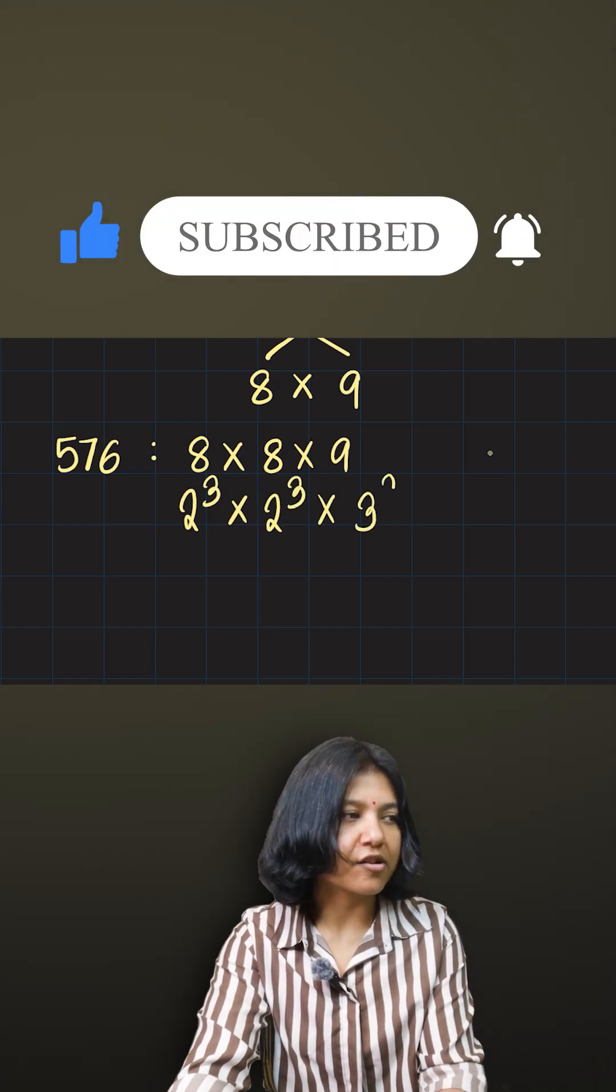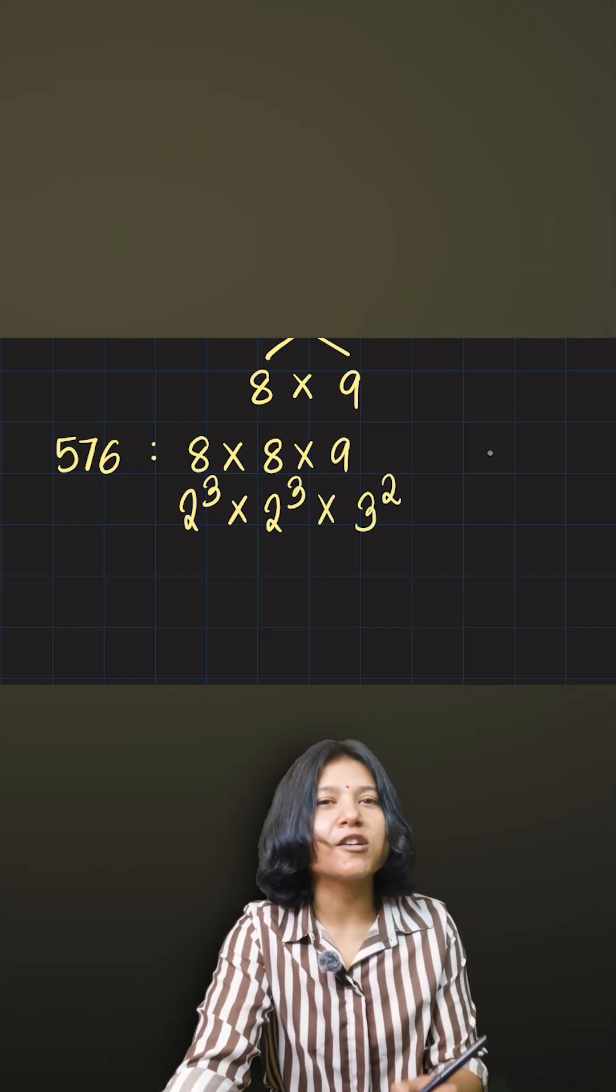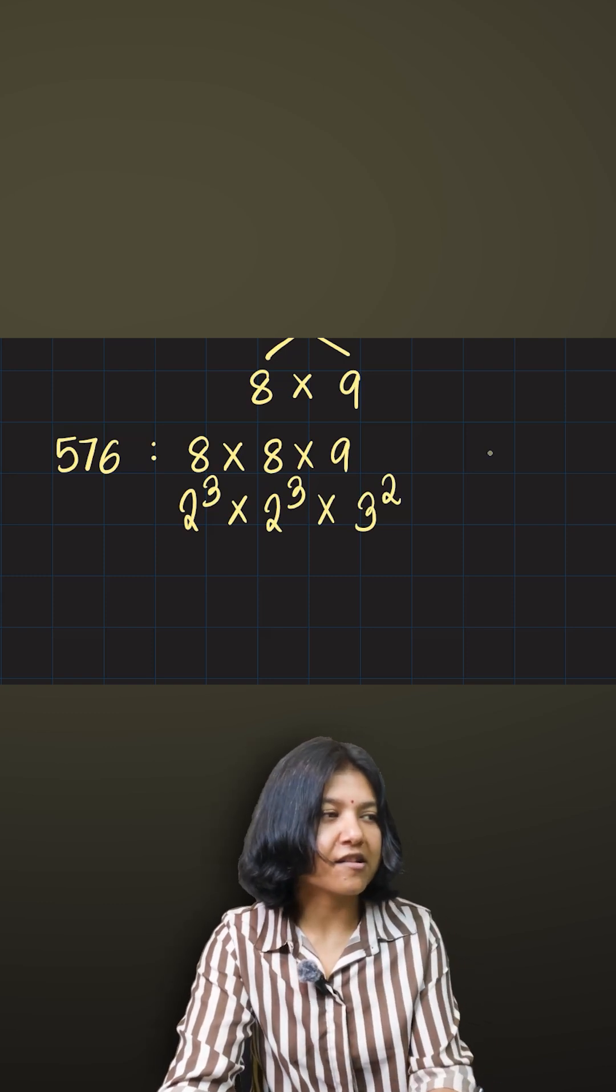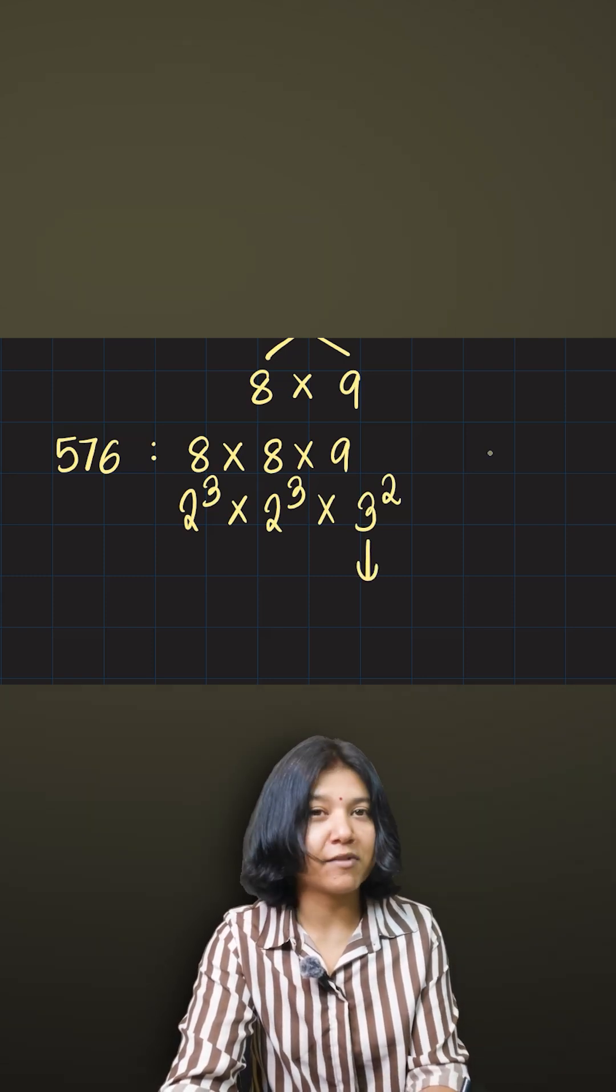To make it a cube number, you want all the prime factors to be in cube form. This is the only one that's not in cube. So to make it power of 3, you just want to multiply it by one more 3.